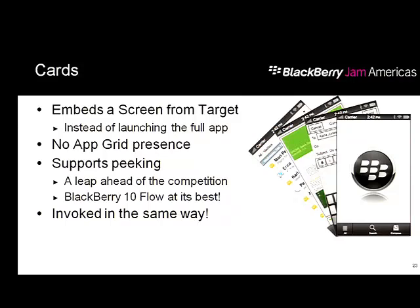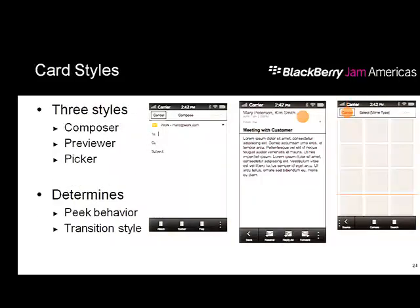There are three types — or styles — of cards: composer, previewer, and picker. What these styles determine is the peak behavior and the transition style — how the card flies in or out. These are the only two things determined by the card style. The previewer flies in from the right; composer and picker fly in from the bottom. When you define a card target, you choose one of these three styles.